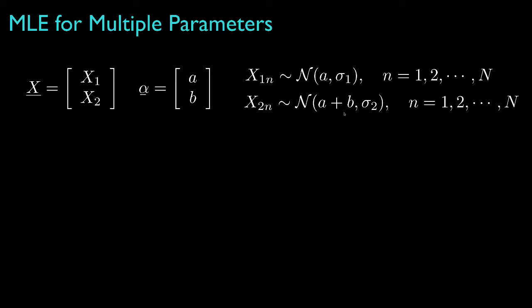The unknown parameters are a and b, and we'll assume that the two standard deviations, sigma1 and sigma2, are known.